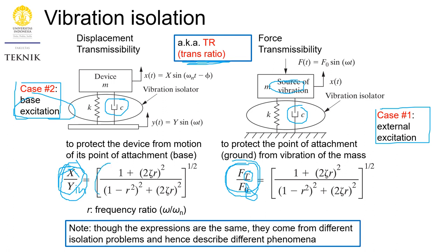There is an additional factor of zeta in the transmissibility equation compared to the magnification factor. If we take zeta equal to zero — meaning no damping — those terms go to zero and we arrive at the original magnification factor equation. So they are the same, except for the additional zeta factor. Although displacement transmissibility and force transmissibility have the same expression, they come from different problems and describe different phenomena.